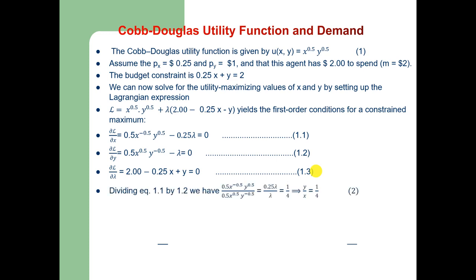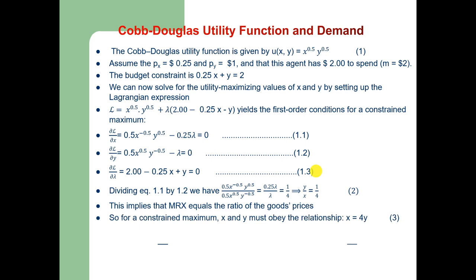If you divide equation 1 by equation 2, we get y/x = 1/4, which implies that the marginal rate of substitution equals the ratio of the goods' prices. So x/y is the marginal rate of substitution between x and y. For a constrained maximum, x and y must obey the relationship x = 4y, or equivalently y = x/4.